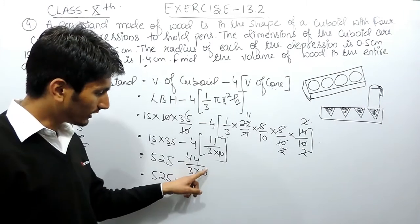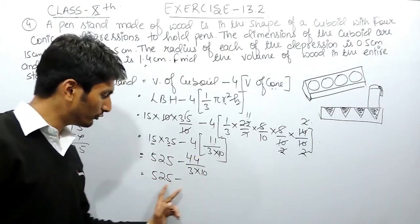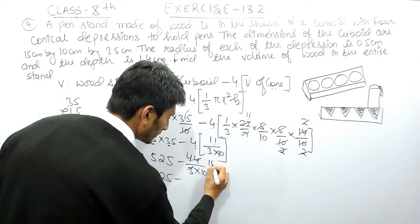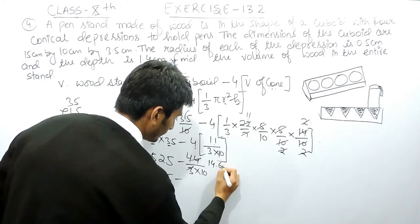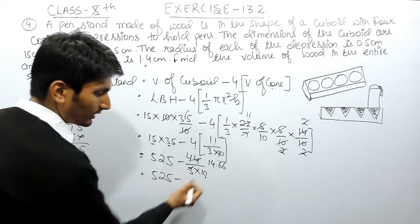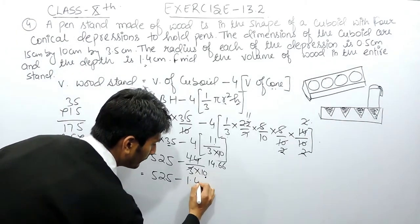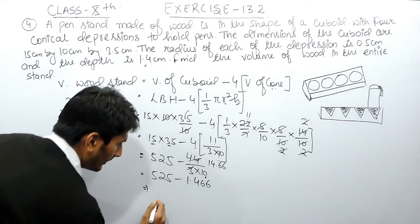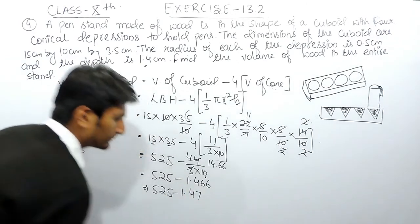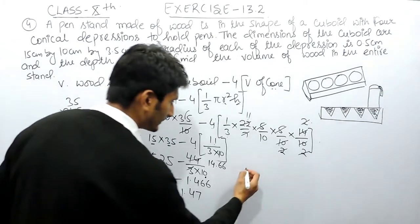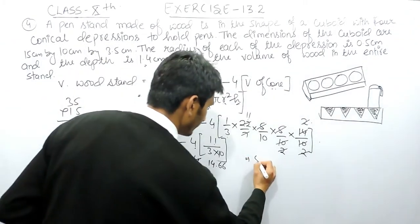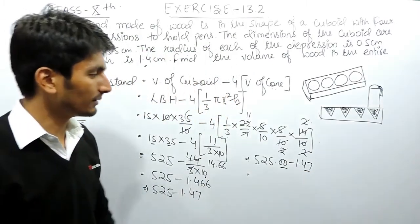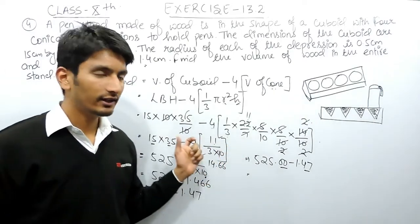You can take the LCM or directly cancel and subtract from 525. The cone term works out to approximately 1.47. So the calculation becomes 525.00 minus 1.47, and you can easily subtract these two values to get the final volume of wood in the pen stand.